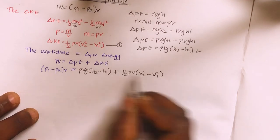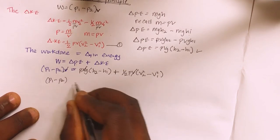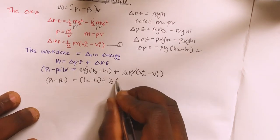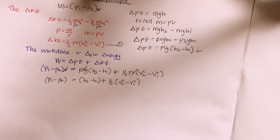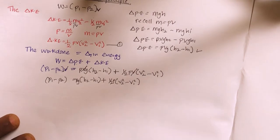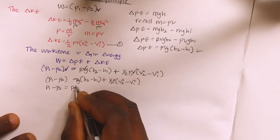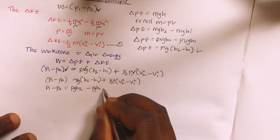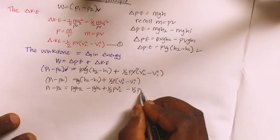We can divide all three terms by V since V is common. We then have p1 minus p2 equals ρg(h2 minus h1) plus one-half ρ(v2 squared minus v1 squared). Opening the brackets: p1 minus p2 equals ρgh2 minus ρgh1 plus one-half ρv2 squared minus one-half ρv1 squared.